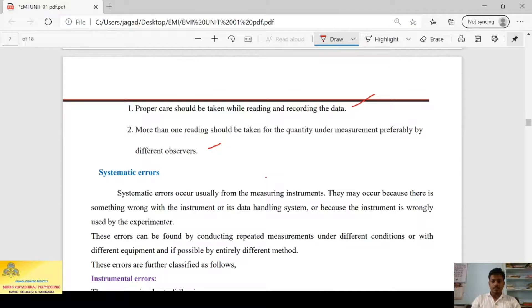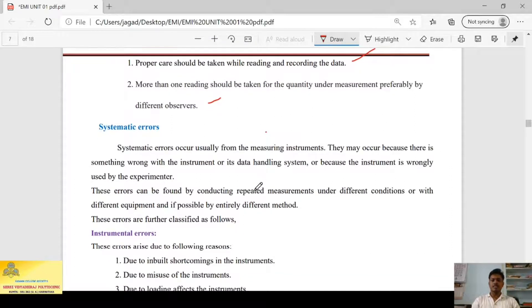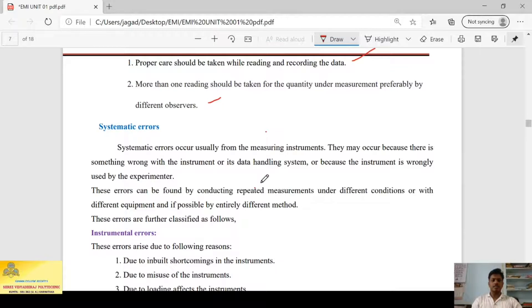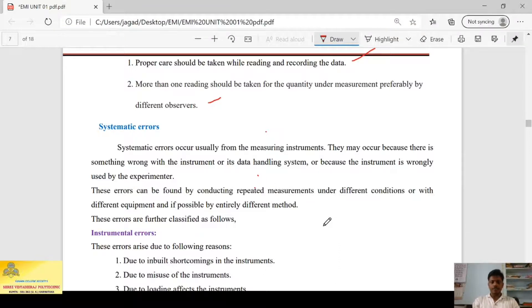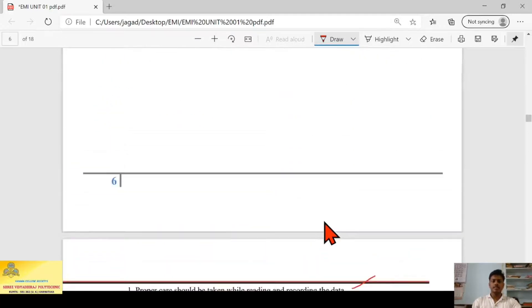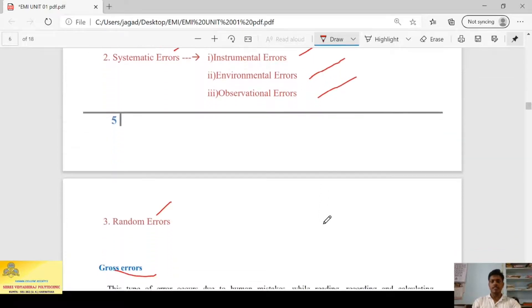Next we have systematic errors. Systematic errors occur usually from a measuring instrument. They occur because there is something wrong with the instrument or its data handling system. Systematic errors may be caused due to instrument manufacturing or external events like noise or temperature. This kind of errors can be avoided by conducting repeated measurements under different conditions or with different equipment if possible by entirely different methods. As I said, there are three subclassifications of systematic error: instrumental errors, environmental errors, and observational errors.